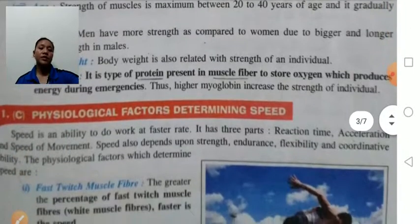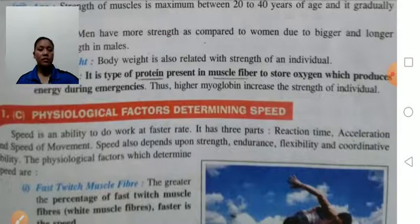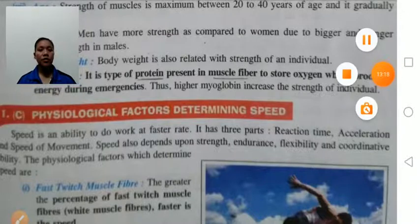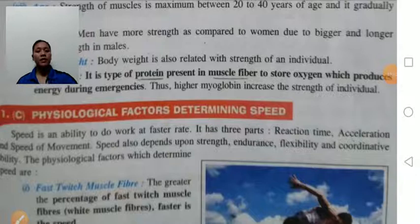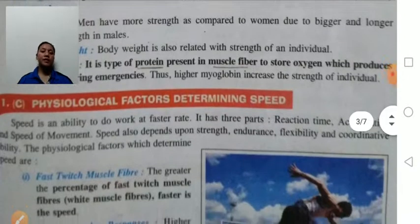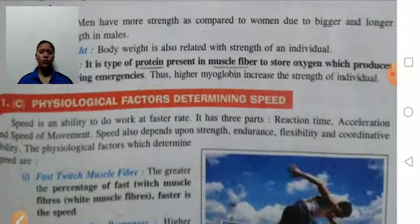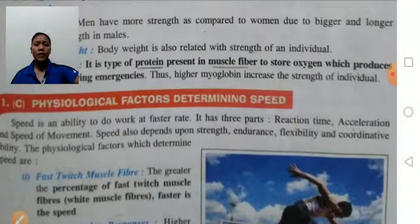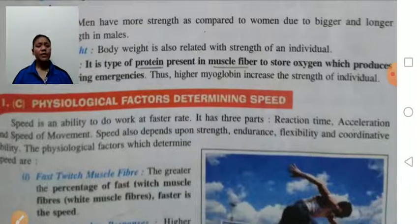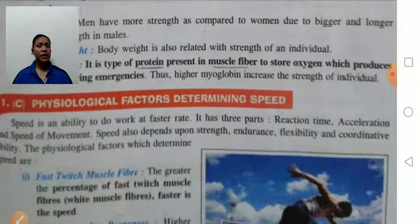Next: physiological factors determining speed. Speed means the ability to do work as fast as possible — the ability to do work in minimum possible time with fast speed. There are types of speed: reaction time means the ability to react immediately to a signal; acceleration means the ability to reach maximum speed; speed of movement means the ability to maintain maximum speed.